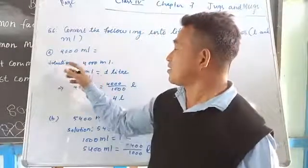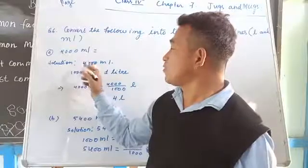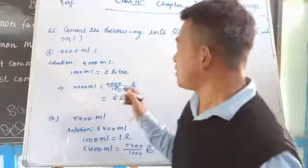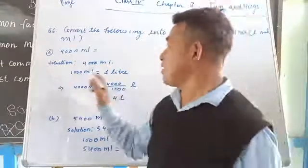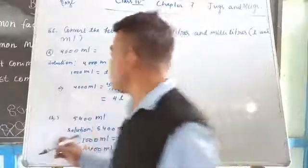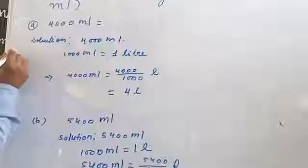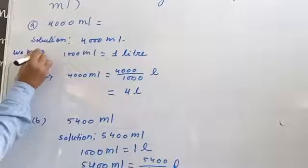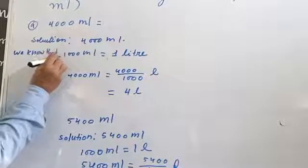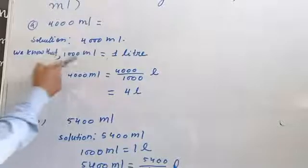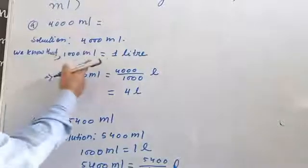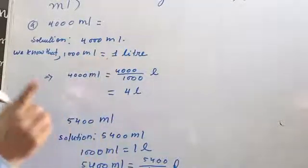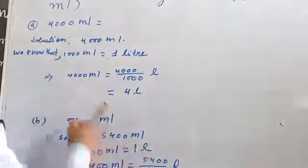Here is the solution. We have 4000 ml that we are going to change into liters. We know that 1000 milliliters is equal to one liter. Yarni ki 1000 ml ka one liter hota hai.